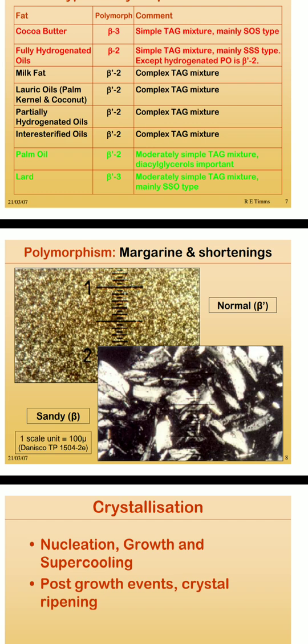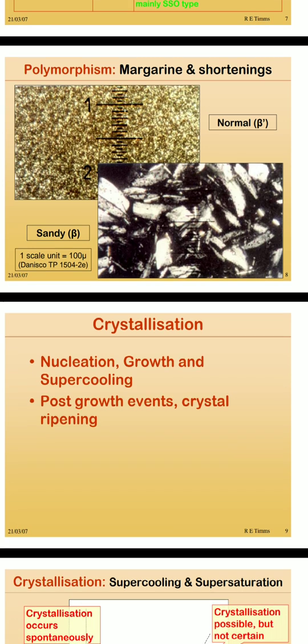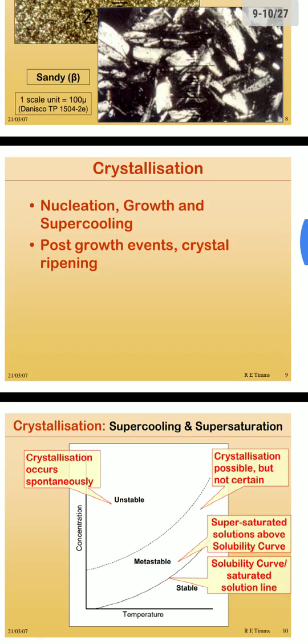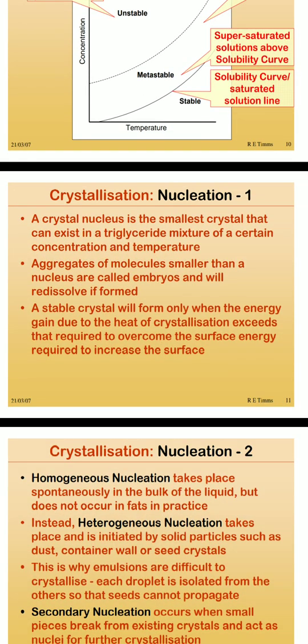These polymorphisms are maintained by crystal formations, forming different types of crystals through the processes of nucleation, growth, and super cooling methods, after which the crystals are ripened. A crystal nucleus is the smallest crystal that can exist in a triglyceride mixture. Just as unit cells have different crystal structures in solid state, these crystals also have different crystal structures and can exist in a triglyceride mixture at a certain concentration and temperature.